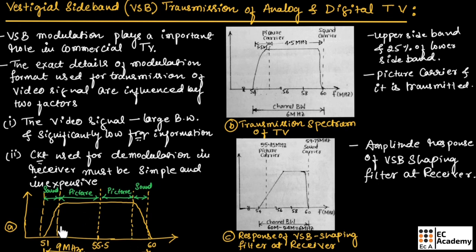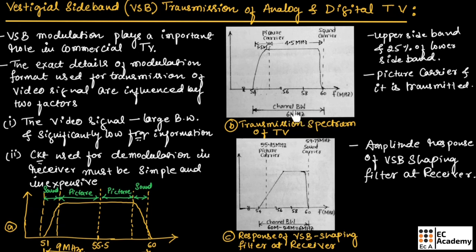Instead of transmitting this entire information, we will transmit the complete upper sideband along with the traces of the lower sideband as shown in Figure B. Figure B shows the transmission spectrum of the television signal. Here the upper sideband is available and 25% of the lower sideband is present along with the picture carrier and sound carrier. This signal will be transmitted with a bandwidth of 6 megahertz. The actual bandwidth was 9 megahertz, but by using vestigial sideband transmission, the transmitted bandwidth is reduced to 6 megahertz.